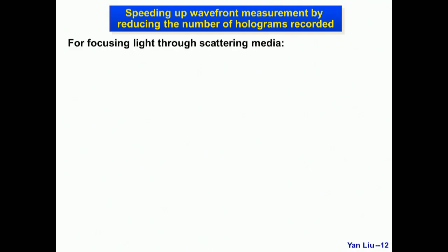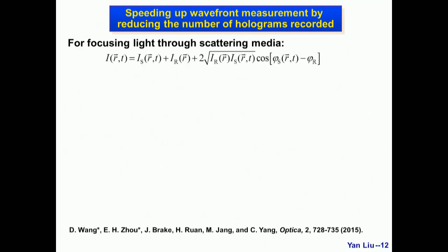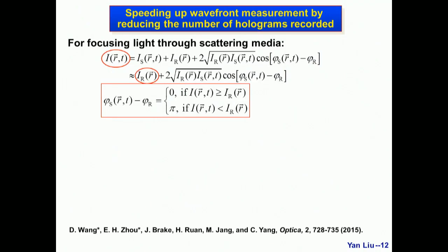For focusing light through a scattered medium, we use a method developed by Professor Chang Huiyang's group. We measure the interference pattern between the sample beam and the reference beam, making the reference beam much stronger than the sample beam. By comparing the measured intensity with the reference beam intensity, we can obtain the binary wavefront of the sample light. If the measured intensity is greater than the reference beam intensity, the cosine term is positive, so the phase difference is between -π/2 and π/2, and we assign it to zero. If the measured intensity is smaller, the cosine term is negative, the phase difference is between π/2 and 3π/2, and we assign it to π. With this method, we only need to record one frame instead of four.